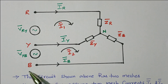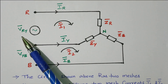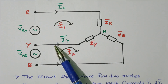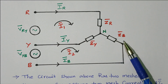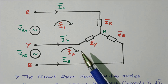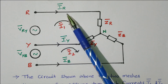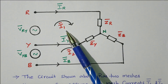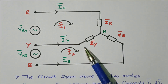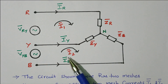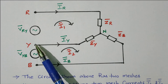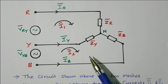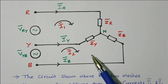RYB is available. VRY is the line voltage across R and Y. VYB is the line voltage across Y and B. The line currents are IR, IY, and IB. The impedances are ZR, ZY, and ZB. For analysis, we apply Kirchhoff's voltage law using the mesh method. We consider the first loop starting from R through ZR and ZY back to Y — current flowing is I1. The second loop starts from Y through ZY and ZB to B — current flowing is I2. So loop 1 has current I1, and loop 2 has current I2.